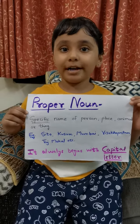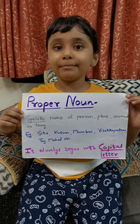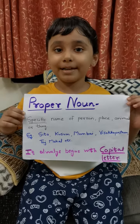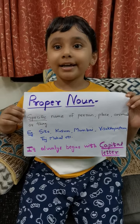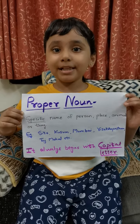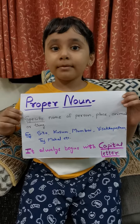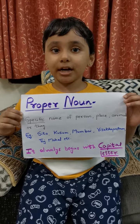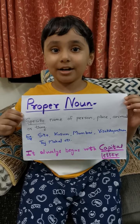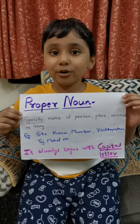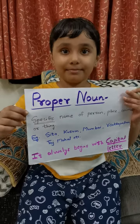Second, proper noun. It is the specific name of a person, place, animal or thing. Example: Sita, Kusum, Mumbai, Visakhapatnam, Taj Mahal, etc. It always begins with a capital letter.